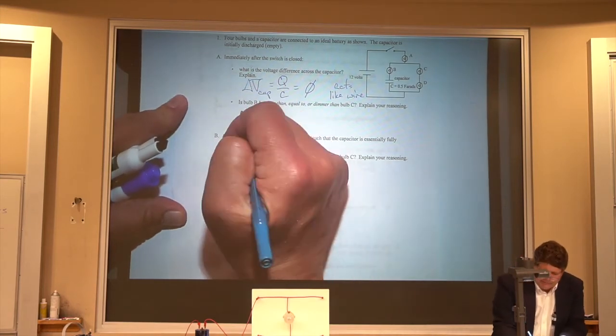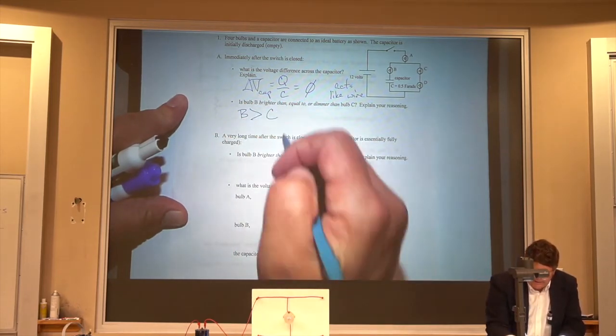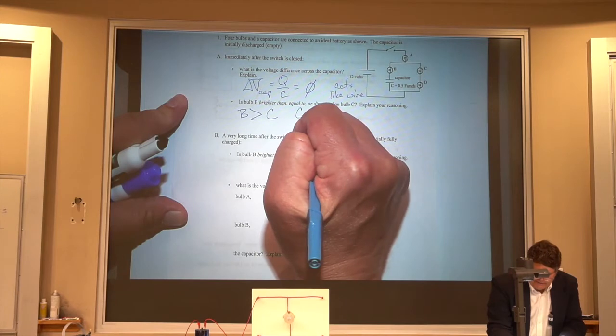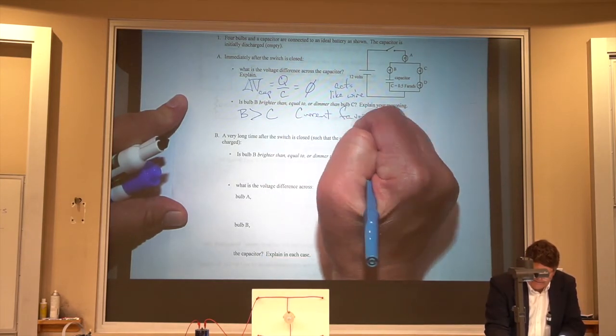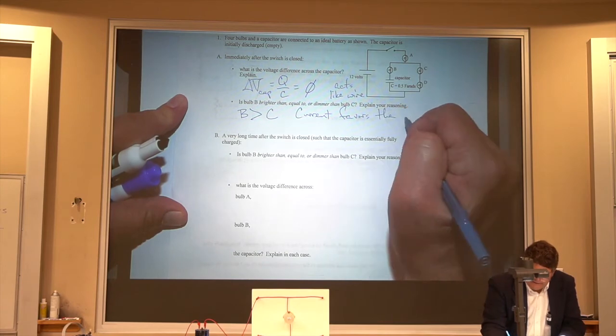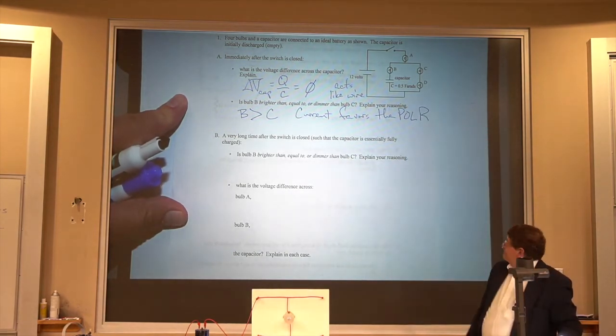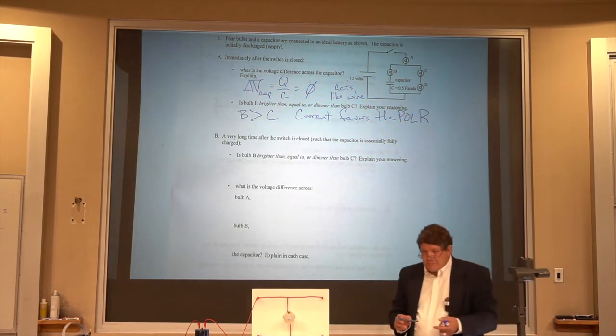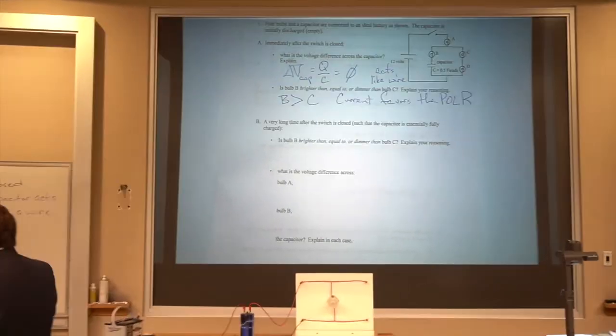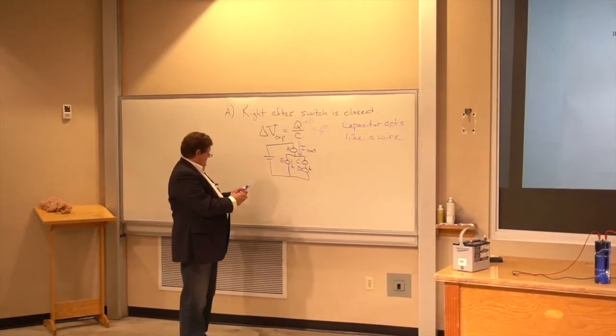And that means that bulb B is going to be brighter than bulb C because current favors the path of least resistance. These are pretty easy. If you understand circuits, you understand circuits with capacitors if you just put in a few little extra ideas.